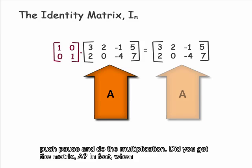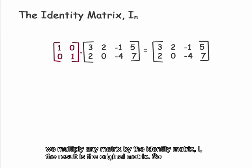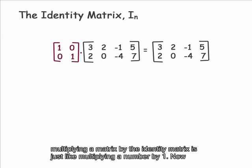Did you get the matrix A? In fact, when we multiply any matrix by the identity matrix I, the result is the original matrix. So, multiplying a matrix by the identity matrix is just like multiplying a number by 1.